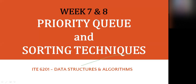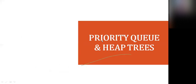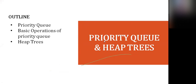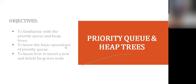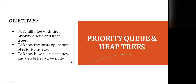Good afternoon, for IP 6201 Data Structures and Algorithms. The topic for Week 7 and 8 is priority queue and sorting techniques. The outline covers priority queues, basic operations, and heaps. The objectives are to familiarize with the priority queue, to know the basic operations, and to know how to insert and delete a heap node.